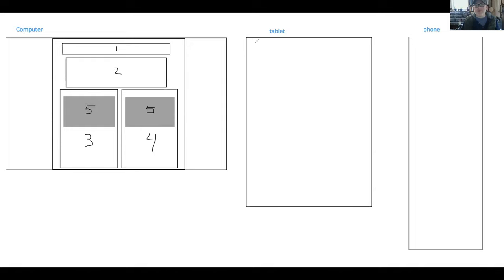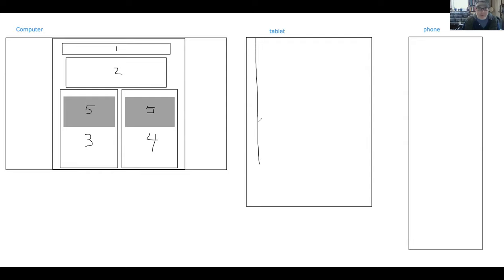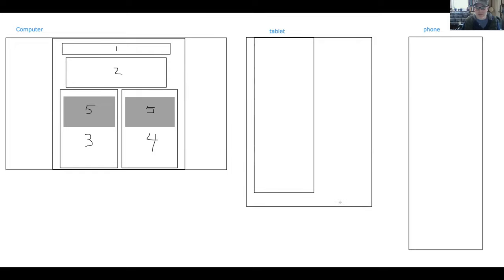For the tablet, we want to start thinking about what we want to do. The tablet is necessarily going to be a different size. Right now we have this body at 80%, which gives us margins. We probably don't want a very wide margin on our tablet, but we might not want it right up against the edge - so maybe the body is around 96-97%.